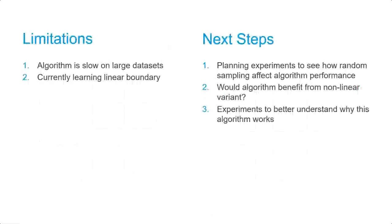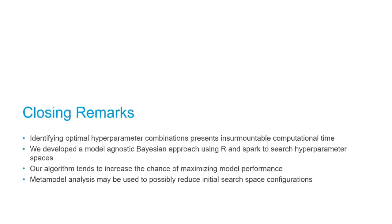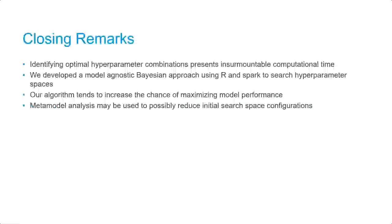Some of our limitations include that the algorithm is very slow on large datasets, and that currently we're only learning on a linear boundary. Some of our next steps are planning experiments to see how random sampling would affect model performance — asking whether this algorithm would benefit from a non-learning variant — and conducting experiments to better understand why this algorithm works. In closing, identifying optimal hyperparameter combinations presents an intractable computational problem. We developed a model-agnostic Bayesian approach using R and Spark to search hyperparameter spaces. Our algorithm tends to increase the chances of maximizing model performance, and we performed a meta-model analysis to reduce our initial search space configurations. Thank you very much.